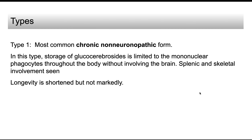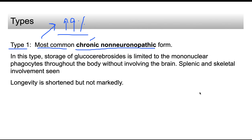There are various types of Gaucher's disease depending on whether the disease is acute or chronic and whether the CNS is involved. Type 1 is the most common variety — approximately 99% of cases fall under this category. It is the chronic non-neuropathic form, meaning the disease is chronic, manifesting during adulthood, and there is no CNS involvement whatsoever.